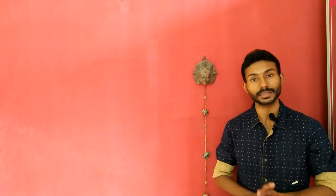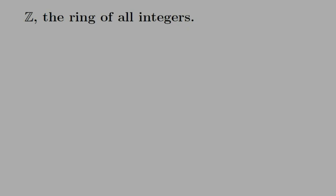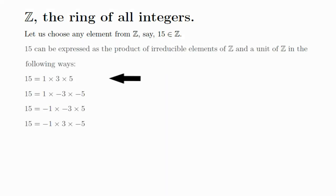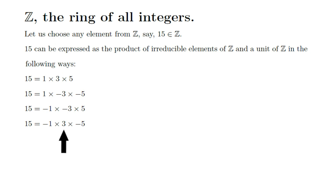Let's try to understand the concept of a unique factorization domain with the help of an example. Let's take the ring of all integers and pick the integer 15. The following are four different expressions of 15 as a product of a unit and irreducible elements. The number of elements in all these expressions are the same, so the first condition of a unique factorization domain is satisfied. Also, since 3 is an associate of 3 and negative 3, and 5 is an associate of 5 and negative 5, the second condition of a unique factorization domain is also satisfied.